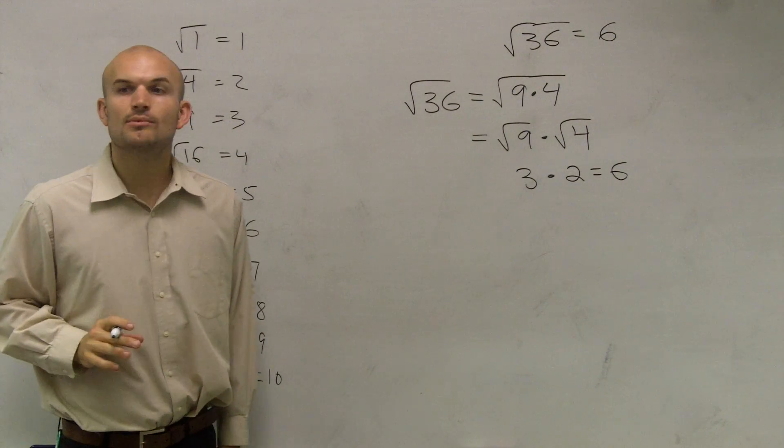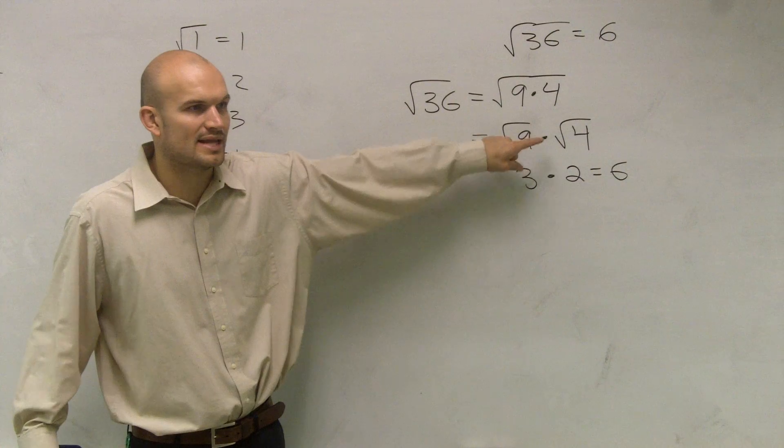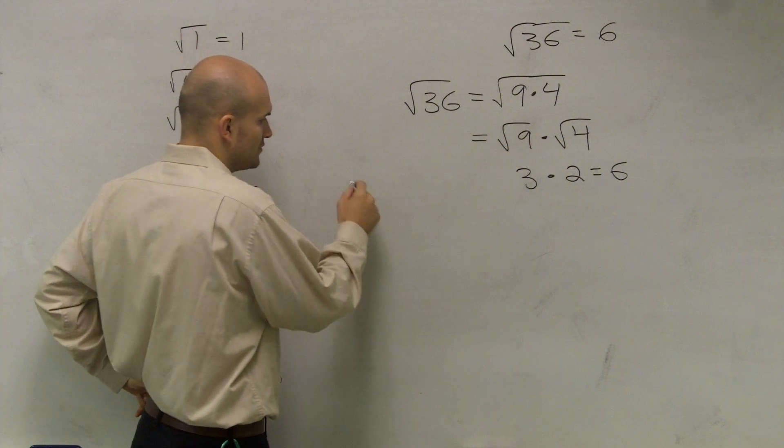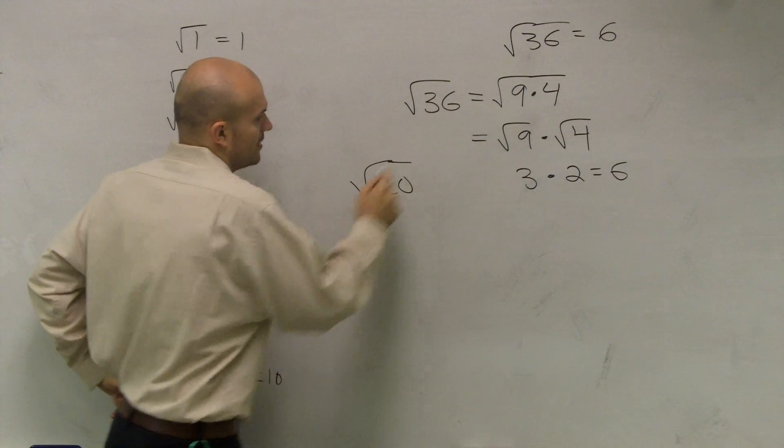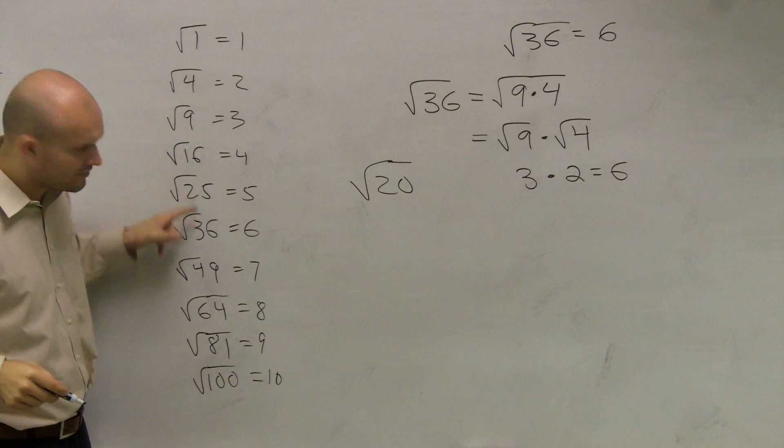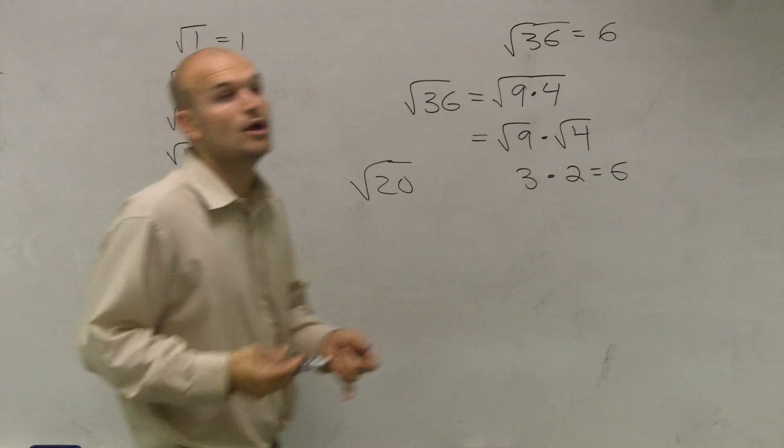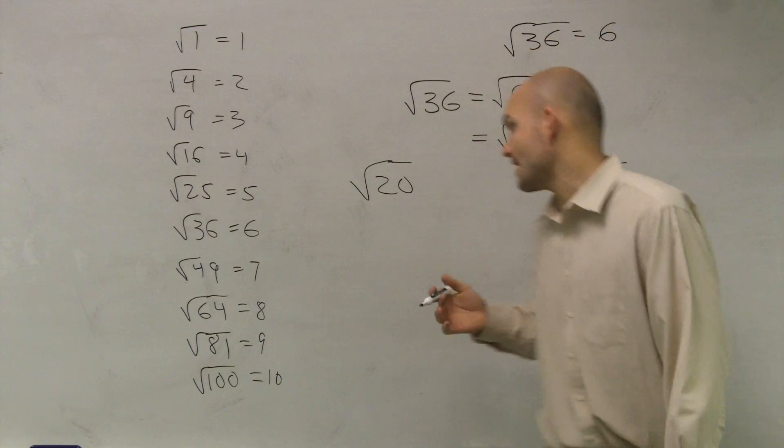So why is this so important? Why is it so important to understand you can separate them when you multiply? Well, let's take a look at it. What if I gave you the square root of 20? Is the square root of 20 one of the root numbers? No. So the next thing you do is you say, all right, what is the largest square number that I can divide into that?